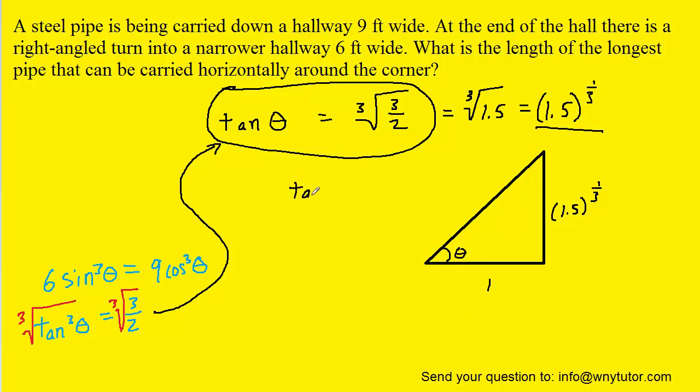Now, that should make sense, because remember, the tangent is equal to the opposite over the adjacent. So here we have the opposite side, and then here we have the adjacent side. And if we divide those two sides, we are indeed left with simply the 1.5 raised to the 1 third.